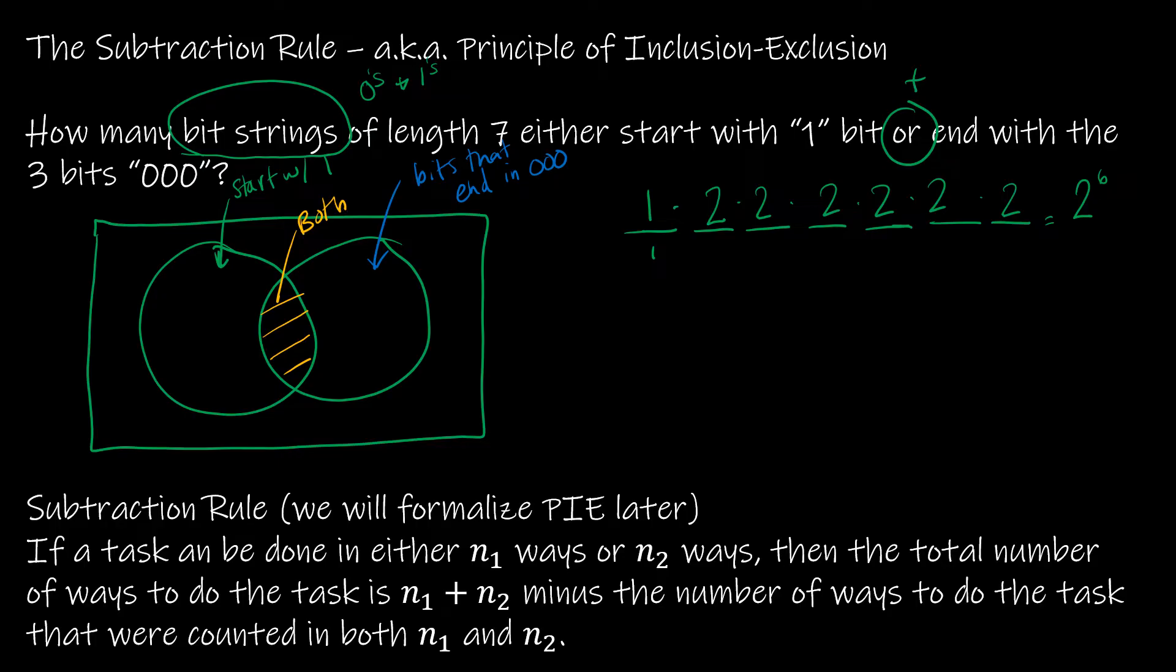Then if I look at the blue option, which is ends in 000. So we know this is a 0, this is a 0, this is a 0. So just one option on those, but no other restrictions. So this is 2 to the 4th.